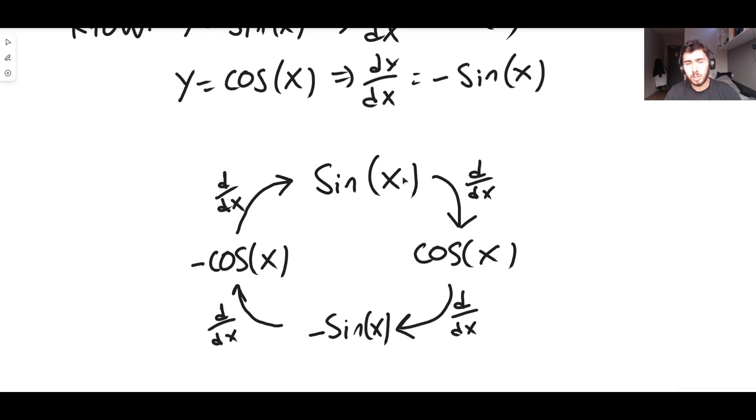Now, because integration is the opposite of differentiation, if you want to integrate you simply go backwards. So to integrate, you just follow these arrows but you go the other way around. So the integral of cos is sin, the integral of sin is minus cos, the integral of minus cos is minus sin, the integral of minus sin is cos, et cetera.